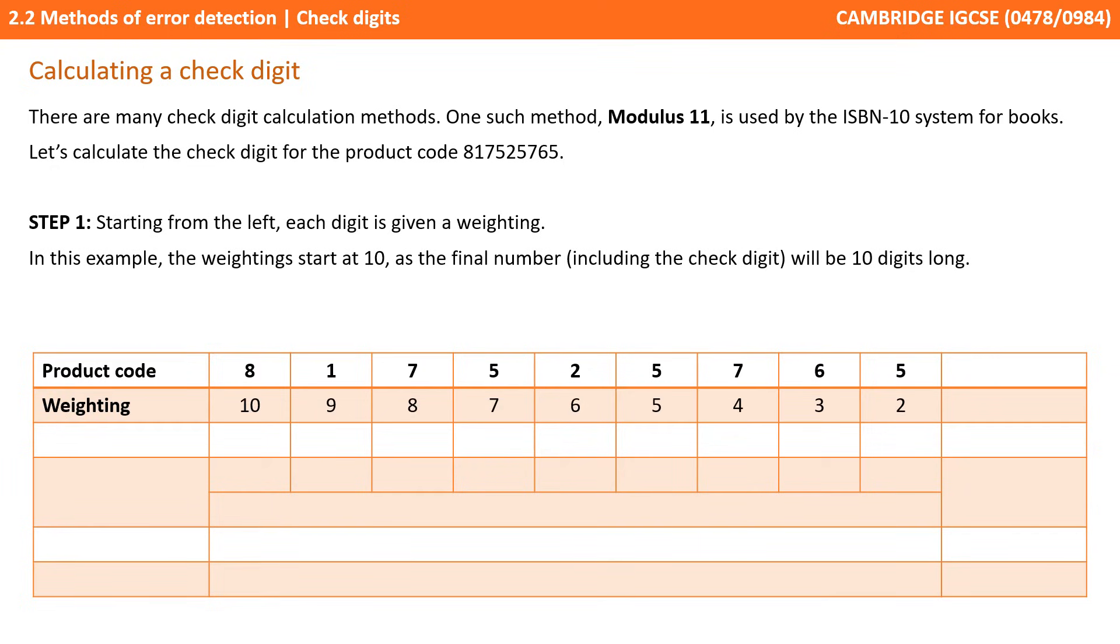The first step is giving each digit a weighting starting from the left and then counting down. In this example we're counting down from 10 to 2 because once we have our check digit the entire number will be 10 digits long. That's how we determine the weighting amounts.